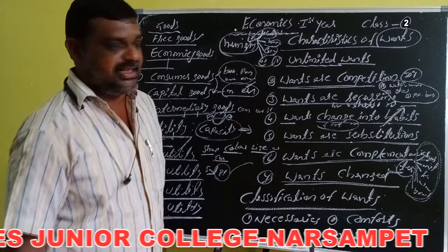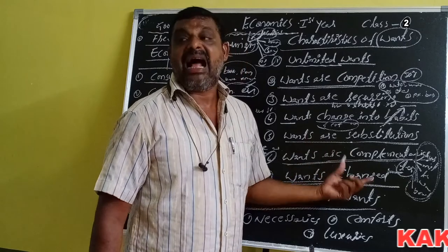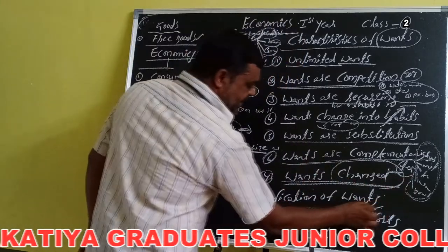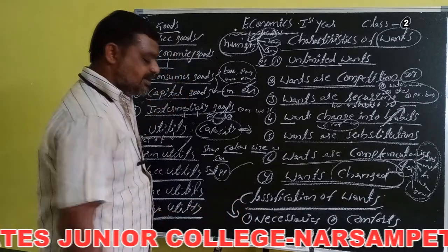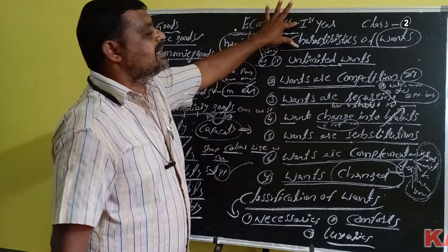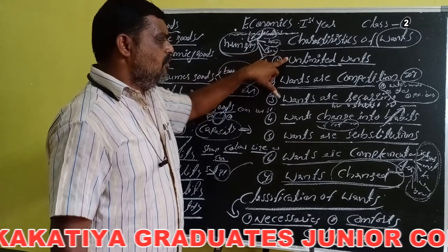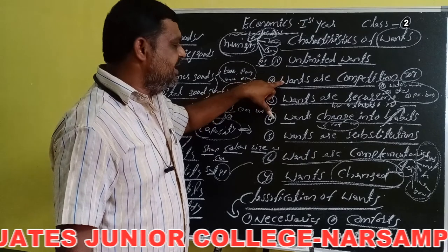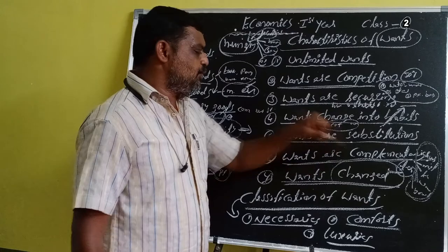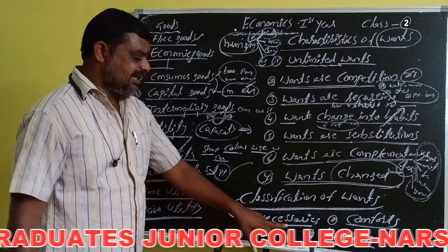Wants change over time, place, and person — from time to time, place to place, and person to person. The classification of wants: there are three types — necessaries, comforts, and luxuries.